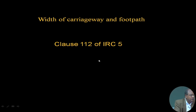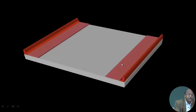In a remote village road we do not have that many vehicles, so we can go for a single lane only. In a single-lane situation, if another vehicle comes from the opposite direction, you have to give way. This is covered by Clause 112 of IRC 5.